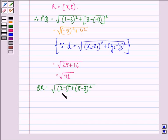That is equal to square root of (x-1) the whole square plus 5 square. That is equal to square root of (x-1) the whole square plus 25.